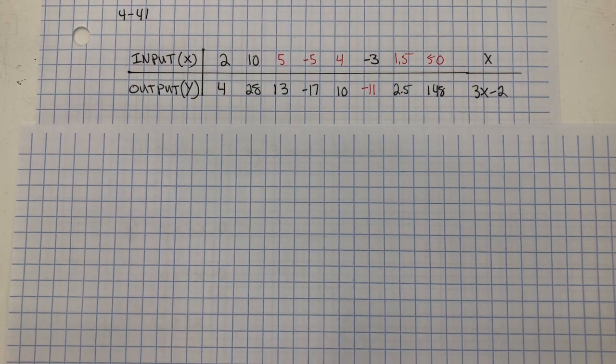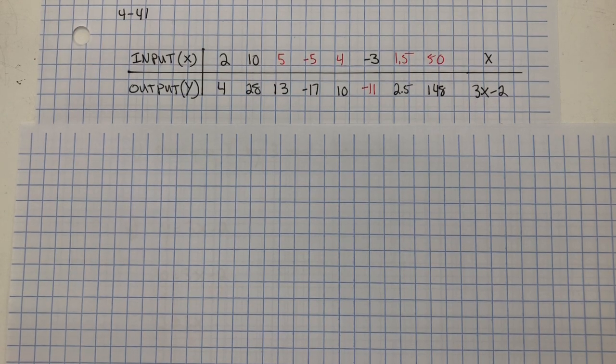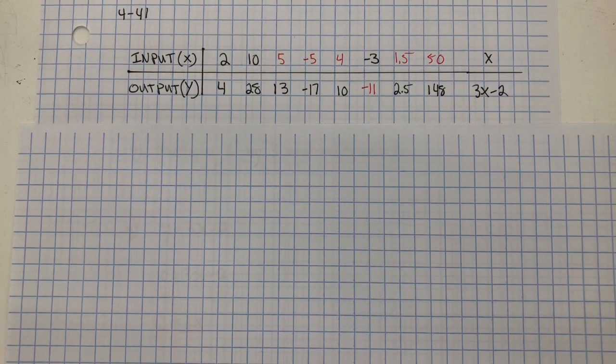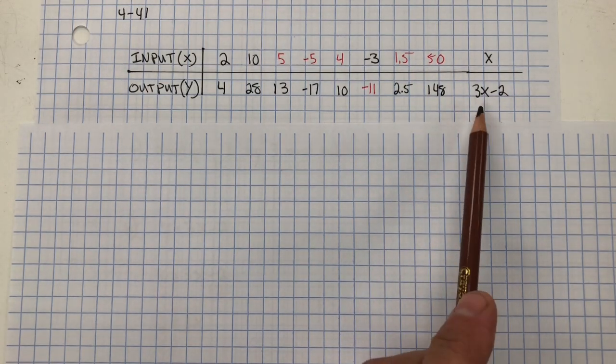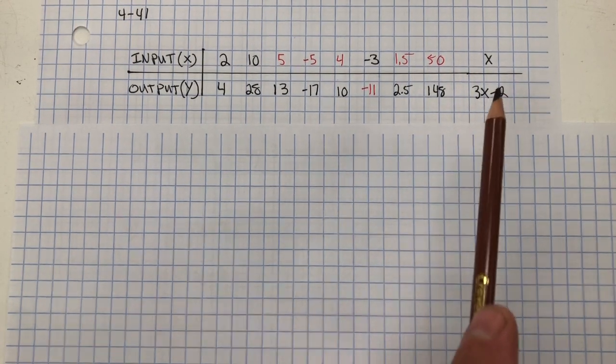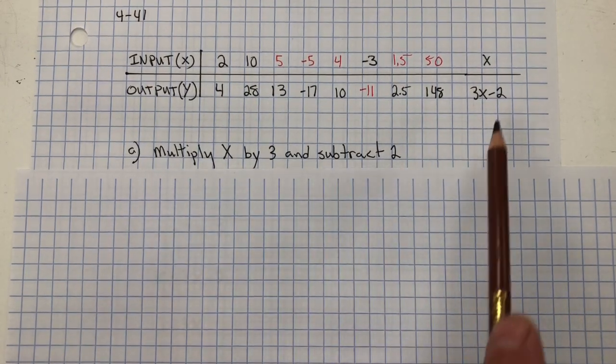In problem 441, you need to explain in words what is done to the input value X to produce the output value Y. And then you need to explain the process you used to find the missing input values. Well, what I'm doing to X is multiplying X by 3 and then subtracting 2.